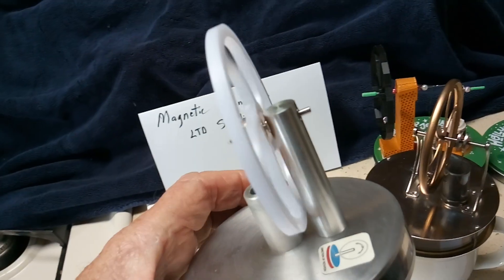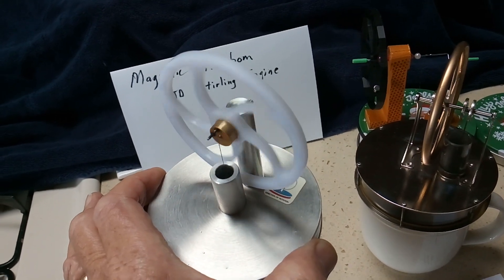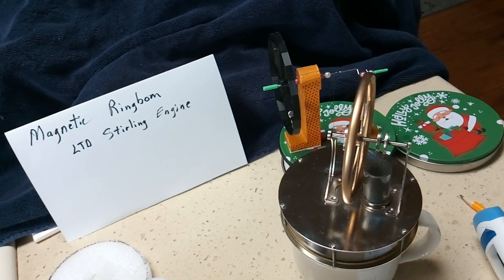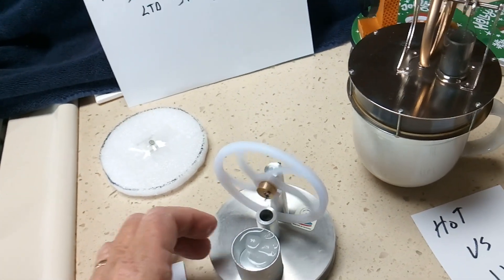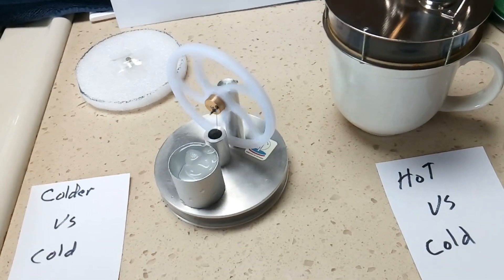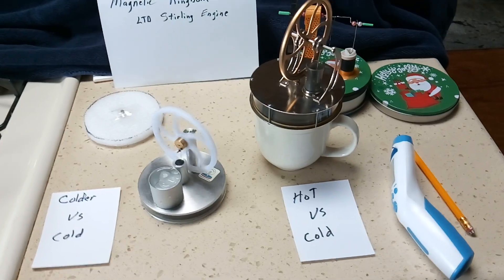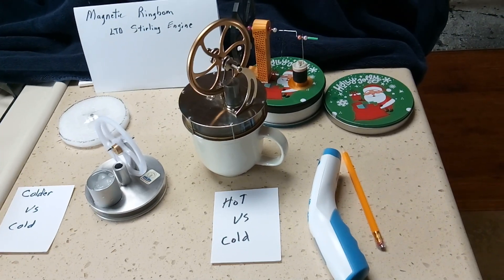One of my favorite little store-bought devices is this magnetic ring bomb that will run on a very low temperature differential. That's where I'm at with this Sterling project. It's fun, something different. Thanks for watching.